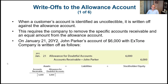When a customer's account is identified as uncollectible, it's written off against the allowance account. We created this allowance account which is based on an estimate of our accounts receivable. This is sometimes a specific percentage of accounts receivable or a specific percentage of sales.